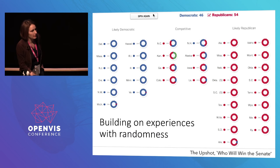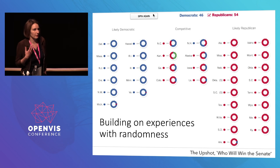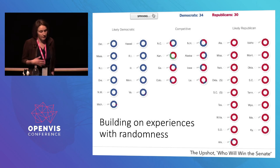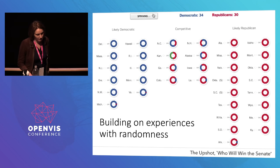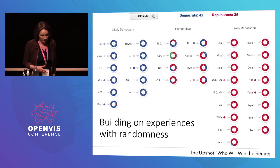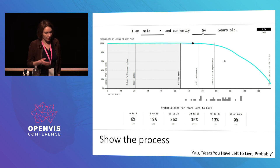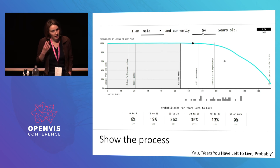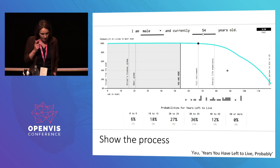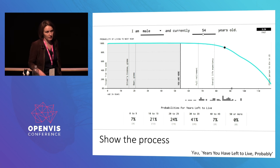Another thing I like about these types of visualizations is that we can, as designers, build on people's natural associations with randomness — through things like coin flips and gambling — and give them a fun experience with uncertainty. This is also from the New York Times: they use roulette wheels to show, in a way you can play again and again, what the outcomes could be for different states in an election. Finally, these visualizations showing individual samples are better at showing the process and communicating what a probability distribution actually is — for example, showing the probability of living to the next year for a given gender and age, building up a histogram as it goes.